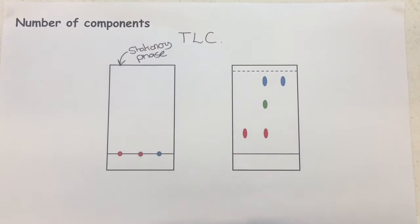At the bottom I've got my sample line, which is what this is called, and here I've got three dots. Now the solvent, which we're going to use shortly, is going to be able to absorb right up that.